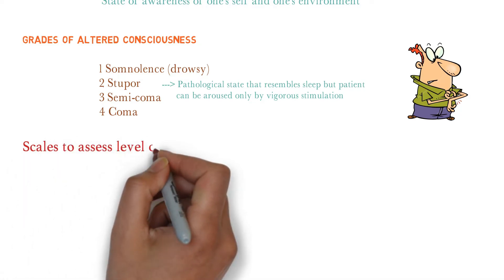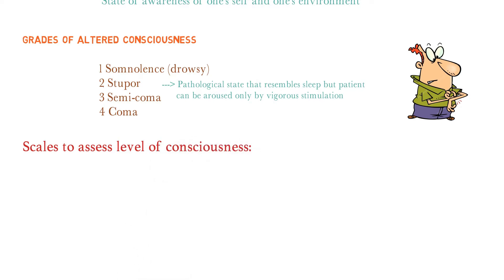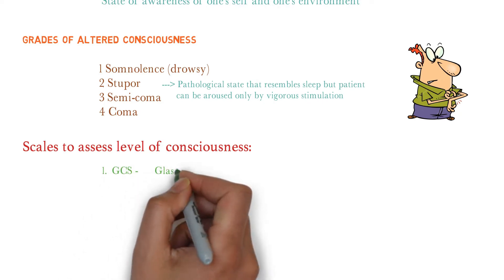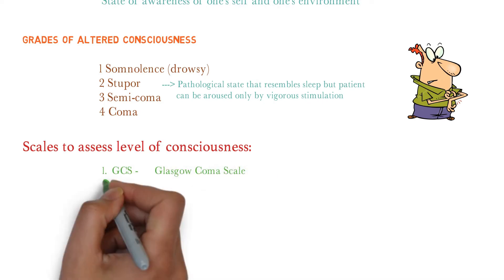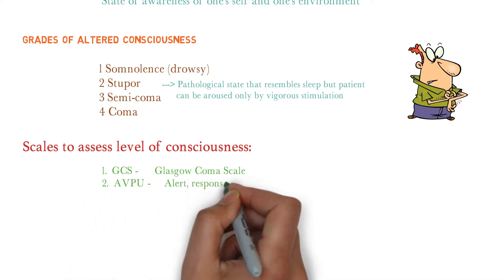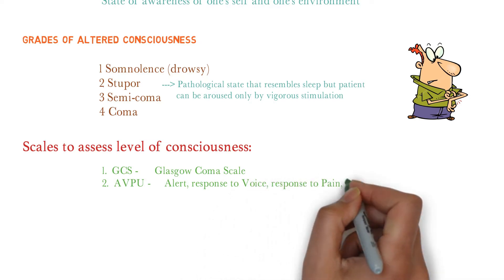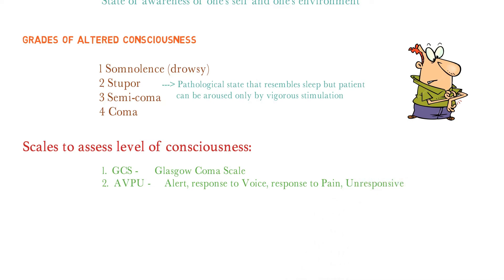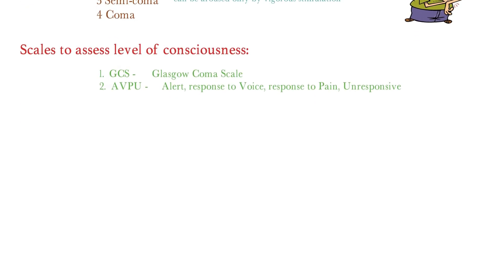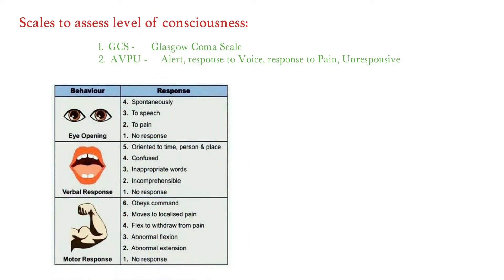You might know the Glasgow Coma Scale, and it is very important. But your examiner is going to ask if you know any other scale besides the Glasgow Coma Scale. That is why you should mention AVPU: A for Alert, V for response to Voice, P for response to Pain, and U for Unresponsive. This is another scale to assess the level of consciousness, and knowing it is important not just for examination but for your clinical knowledge.